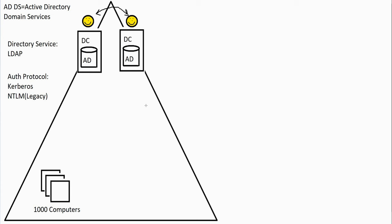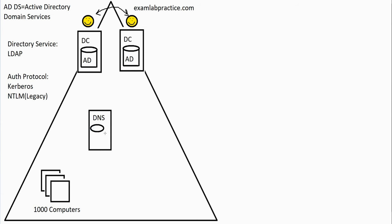All machines have to have a name, and that name must of course be associated with an IP address. There is a service we use on the internet all the time called DNS — domain name service. Our domain must have a name. Usually you would name it after your company, and a lot of people name their domains based on their web presence. For example, my domain might be called examlabpractice.com. You need to have a server in your domain that can associate names and IP addresses together — that server is called a DNS server, and it has a DNS database.